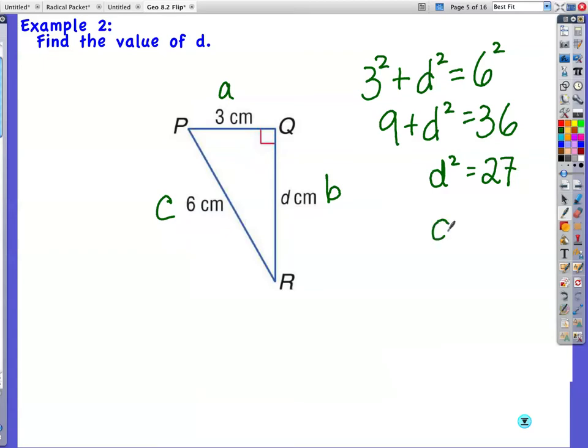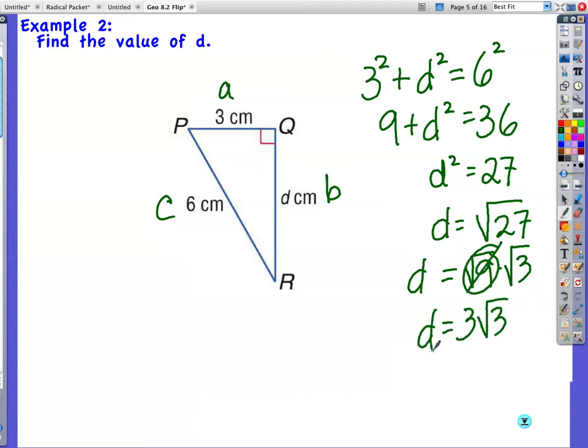Undo the square by finding the square root of the other side. And I don't have anything in my instructions so I'm going to continue on and solve or reduce in radical form. Square root 27 breaks down into square root 9, square root 3. The square root of 9 is 3. So now I have 3 square root 3 for the value of d.